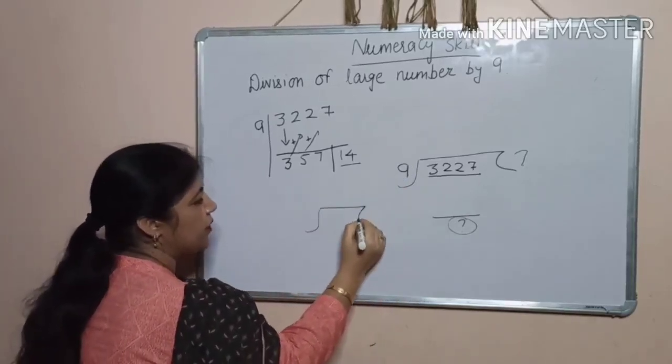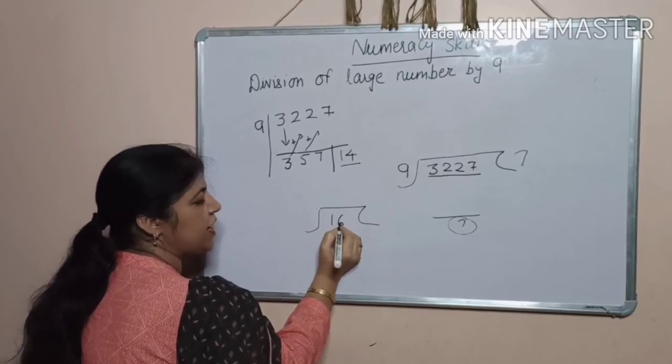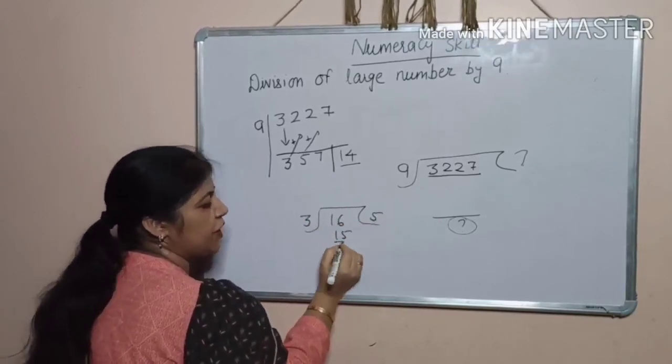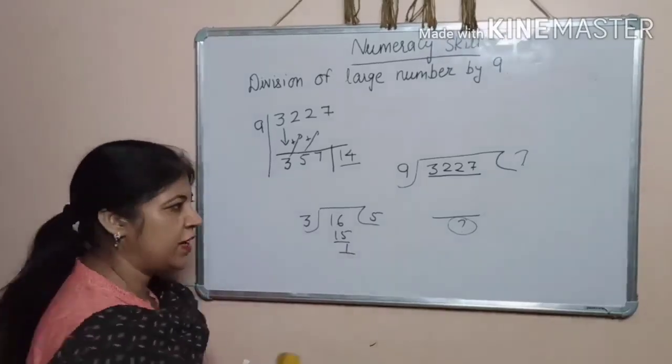Let's take one example. If I am going to divide 16 by 3, 3, 5, 15. You will get 1 remainder.